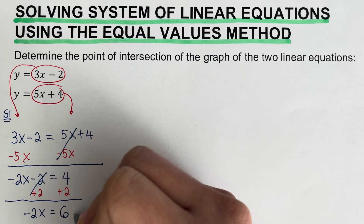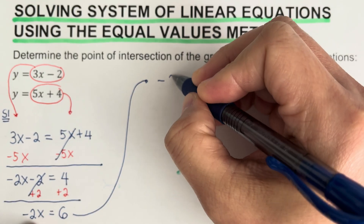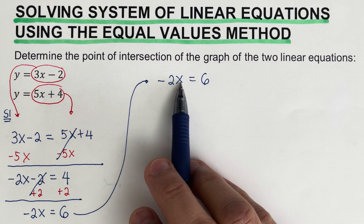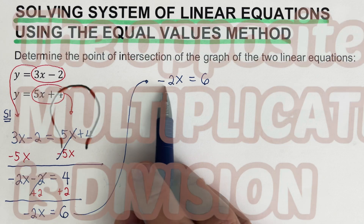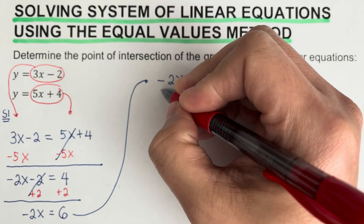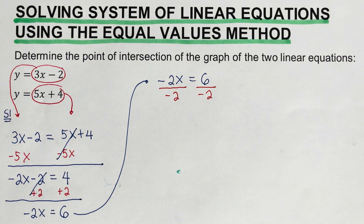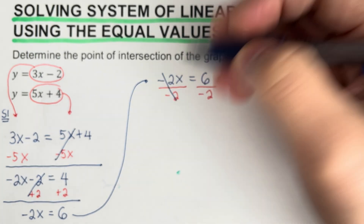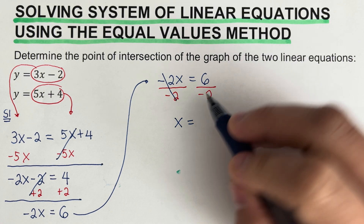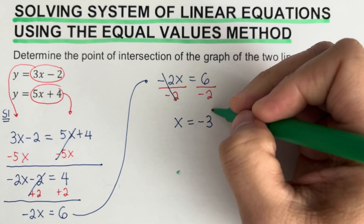So we have negative 2x equals 6, meaning negative 2 multiplied by x equals 6. To get rid of the negative 2, we remember the opposite of multiplication is division, so I divide both sides by negative 2. This gives us x equals 6 divided by negative 2, which is negative 3. I'll put that in a box.